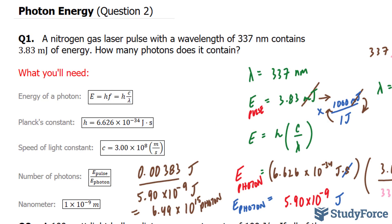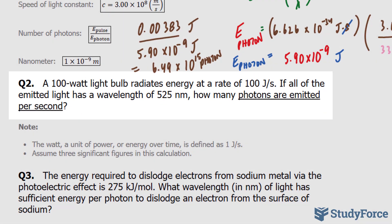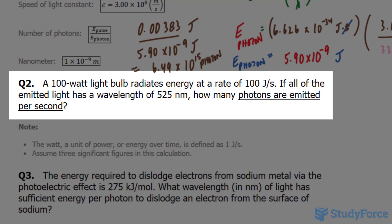In question 2 of this series, where we learn how to solve photon energy type problems, we're asked: a 100 watt light bulb radiates energy at a rate of 100 joules per second. If all of the emitted light has a wavelength of 525 nanometers, how many photons are emitted per second?